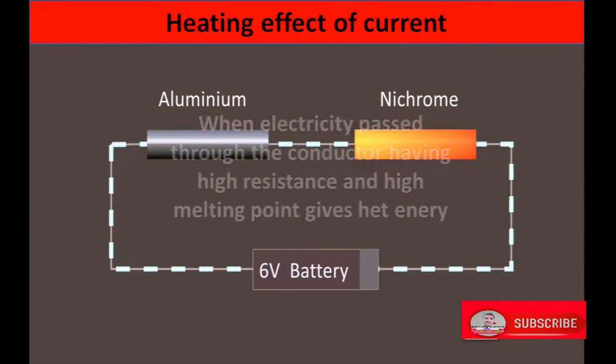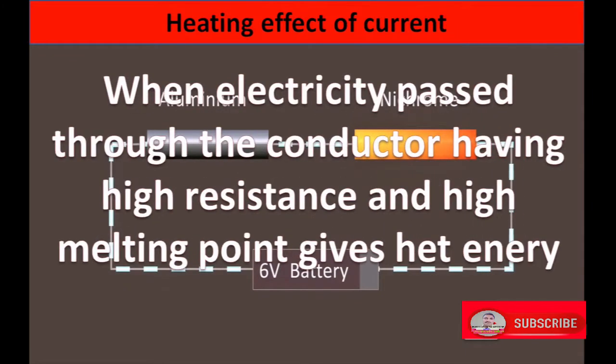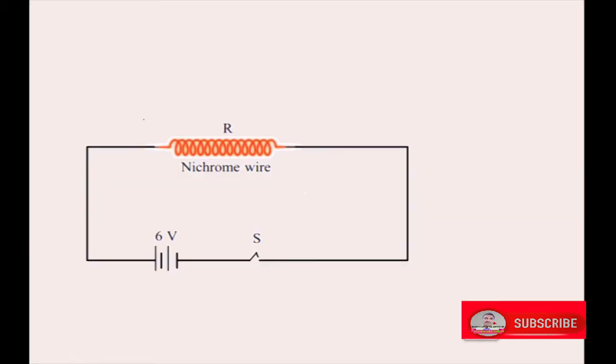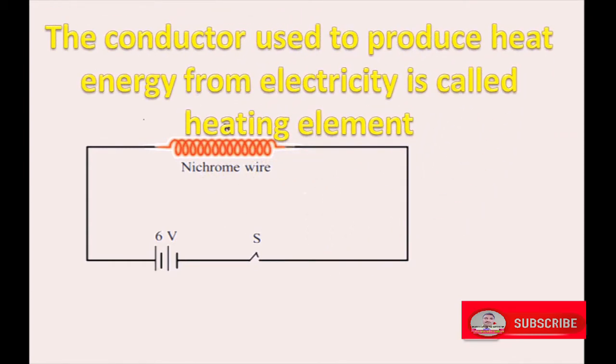Heating effect of current: when electricity is passed through a conductor having high resistance and high melting point, it gives heat energy, which is called heating effect of current. The conductor used to produce heat energy from electricity is called a heating element.